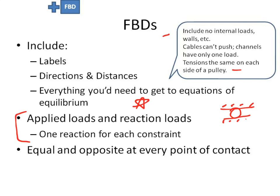For each constraint — remember when we were talking about constraints — if it can't move right or left, then you get a force that's right or left. If it can't go up and down, then you're going to get a force that's up. If it can't rotate, then you get a moment in that direction. So it's the constraints that give you what you need to know. If you have two objects that you're going to draw a free body diagram of, you're going to have equal and opposite loads on either side of the contact spot. These are our basic ideas for free body diagrams.